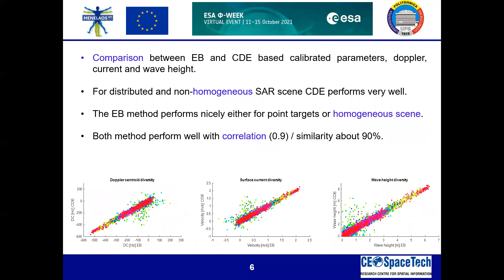At the end, we have the comparison between the two techniques implemented for Doppler centroid estimation and then calibrated other parameters like Doppler current and wave height. We concluded that for the distributed and non-homogeneous scene, the correlation Doppler estimation performed very well. However, for the homogeneous or point target, the energy balancing method performed very nicely. For both methods, we performed correlation and similarity analysis and found it to be about 90%, concluding that this technique is efficient for Sentinel-1 SAR data.